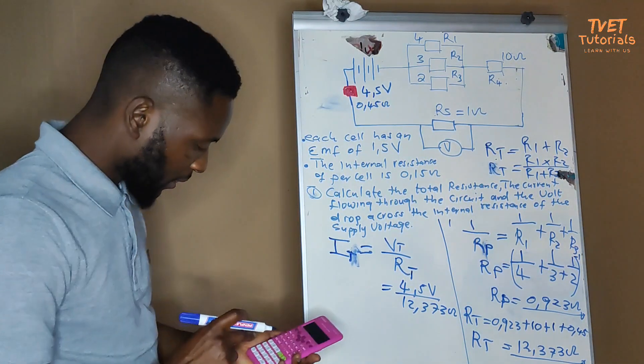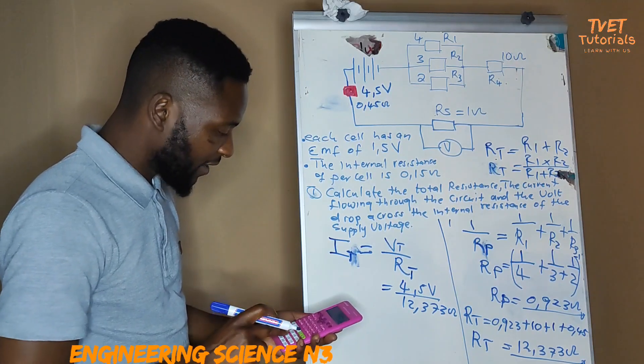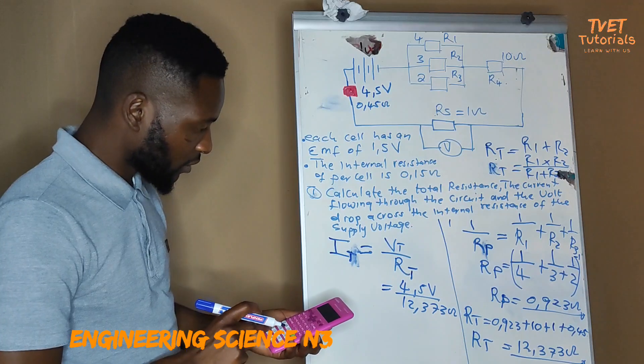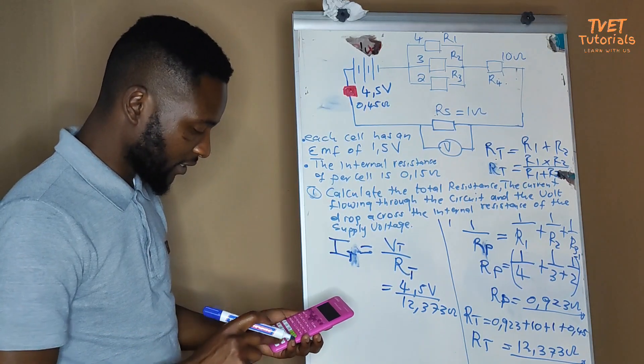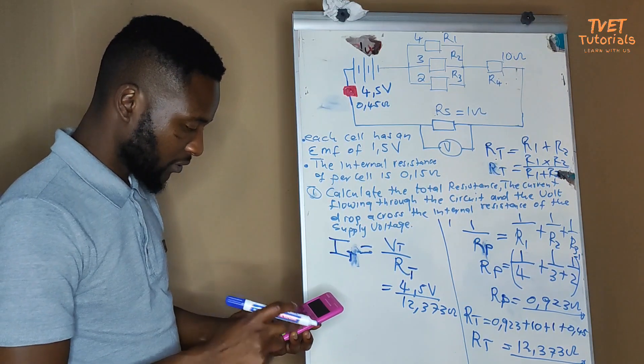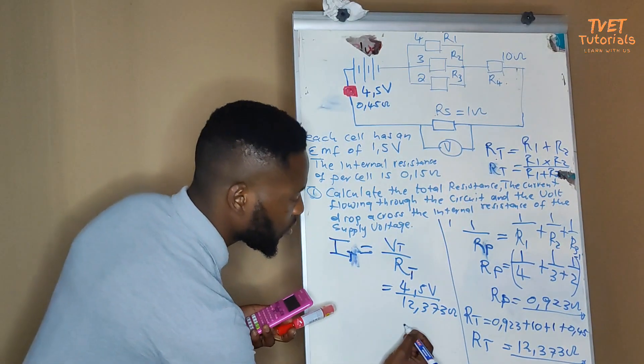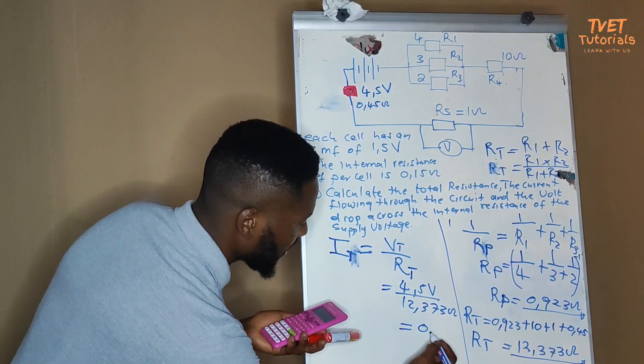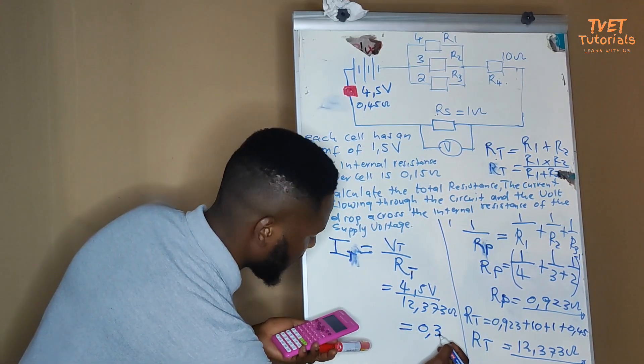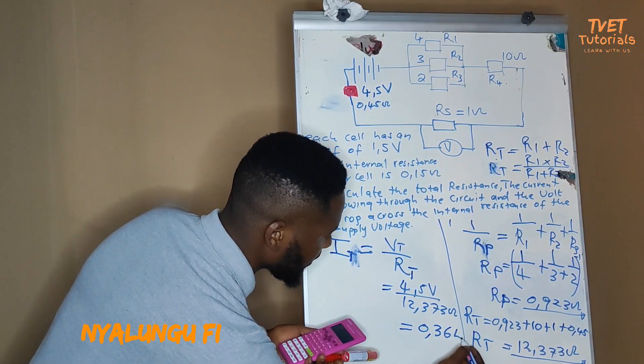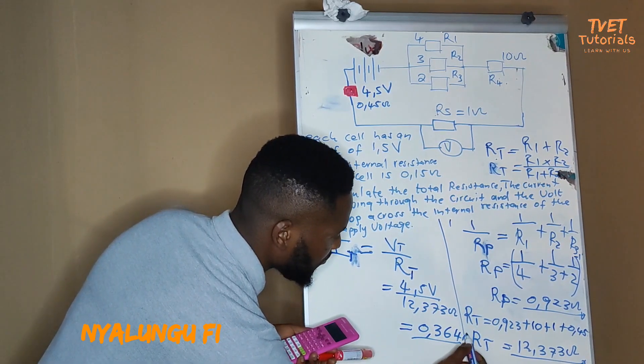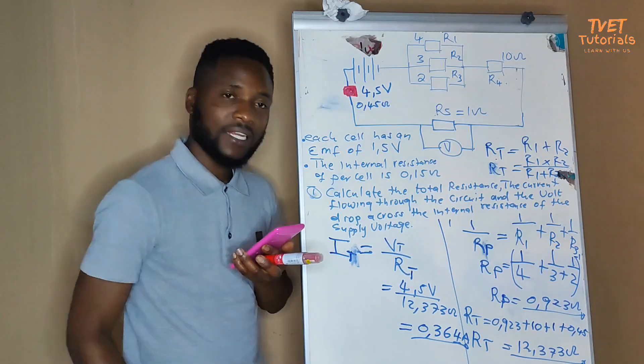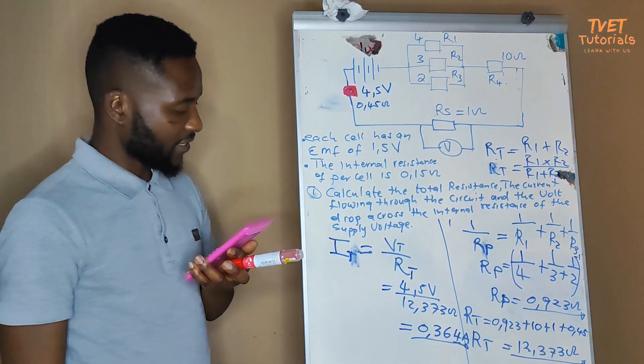So, we have 4.5 divided by 12.373. So, the value of the current here is 0.364 amps, if we are rounding off to 3 decimal places.